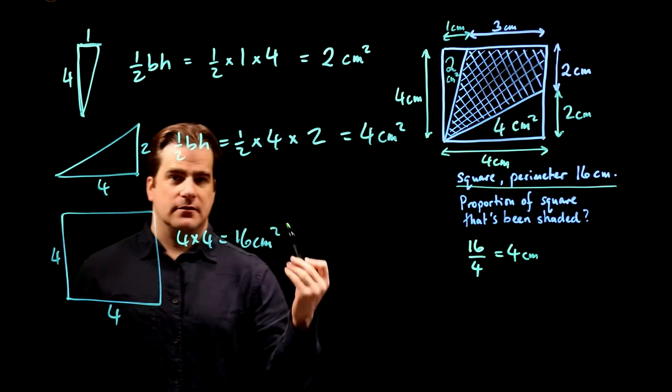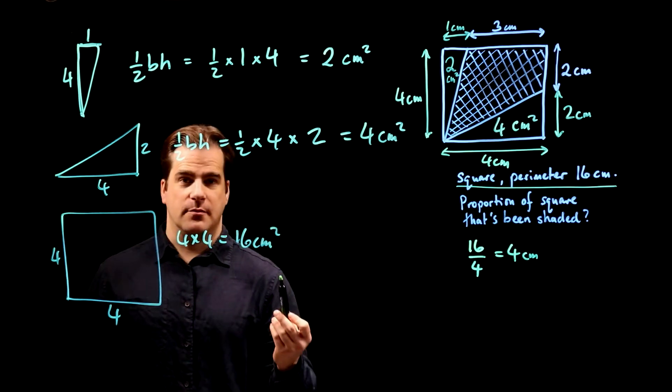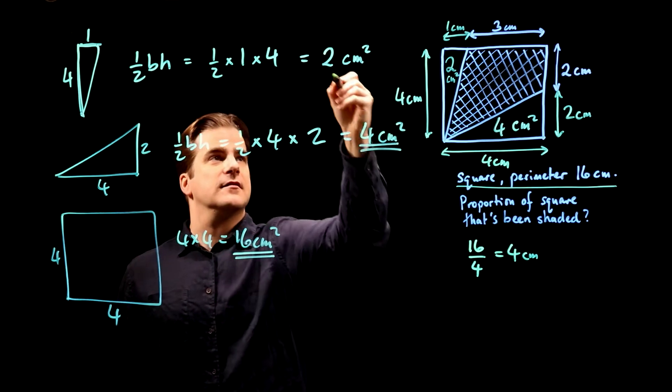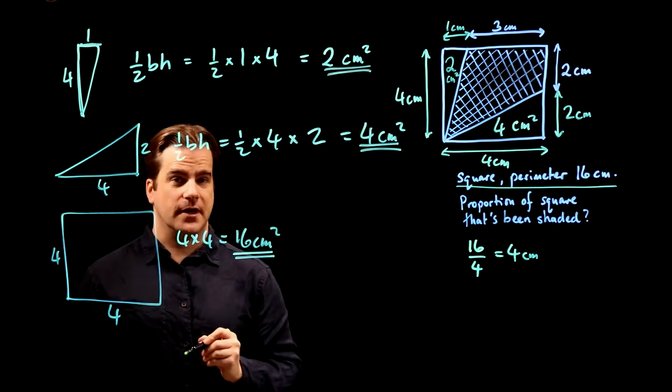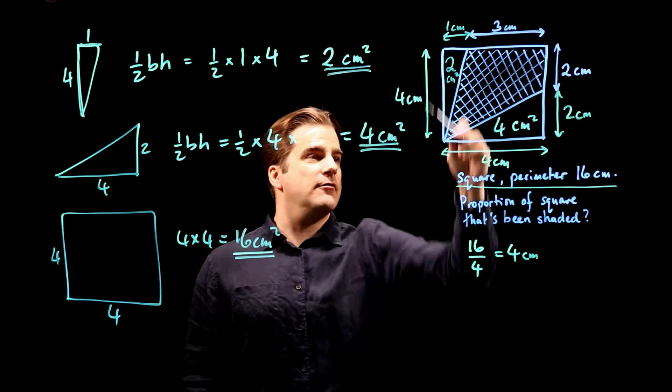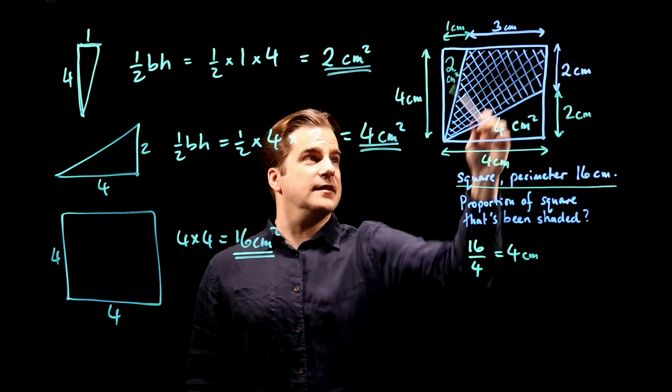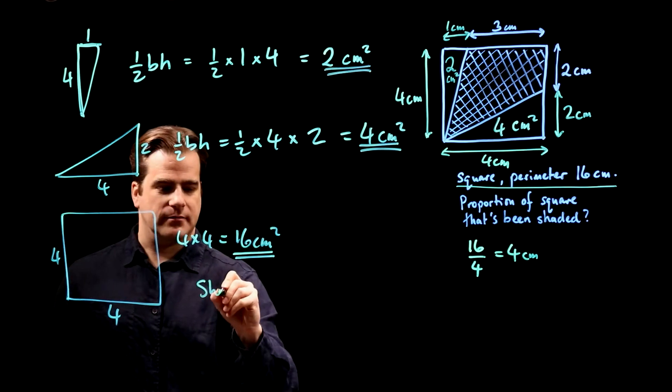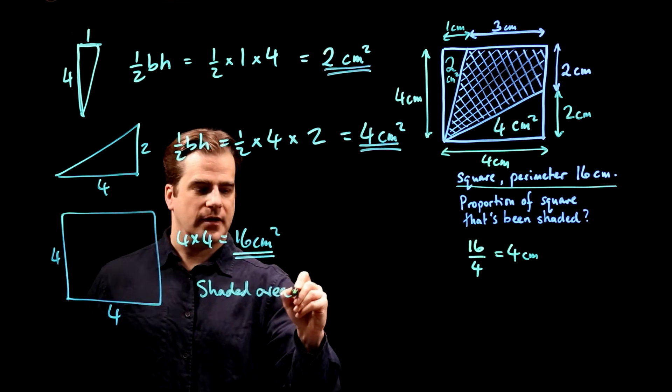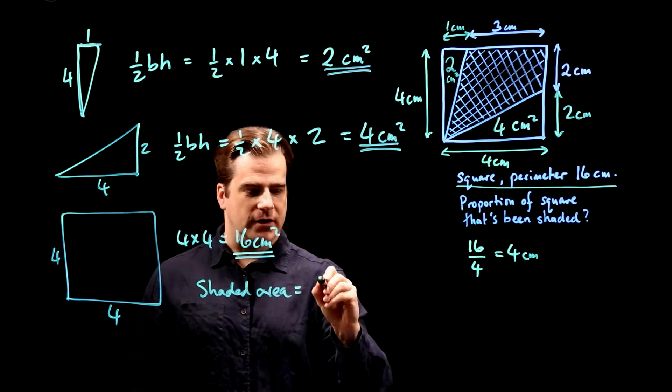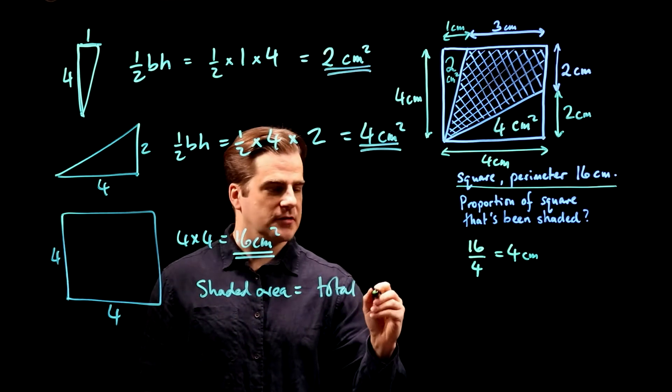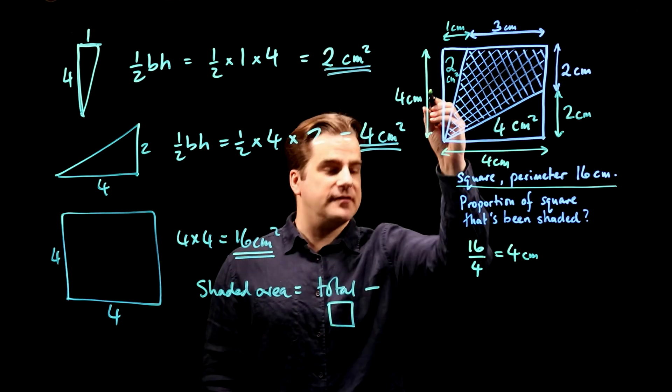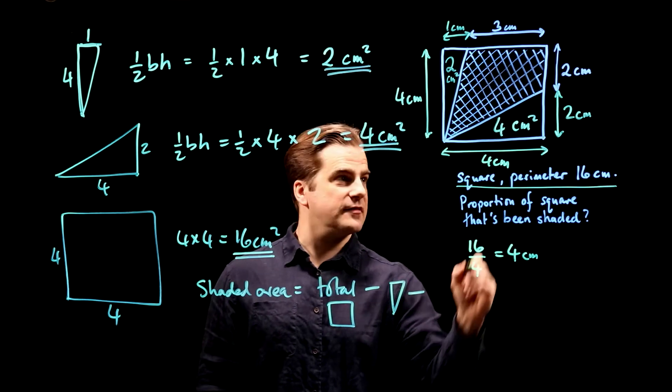So, the area of the shaded bit is equal to the whole thing minus that minus that. So, the area of the whole thing minus this, minus that leaves behind the shaded area. So, shaded area equals total area minus that one minus that one.